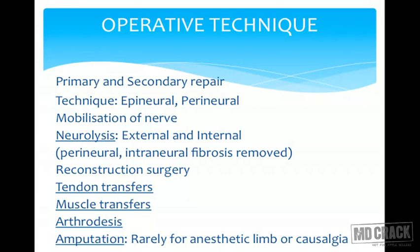A commonly done procedure is neurolysis — because fibrous tissue around the nerve causes compression, you must release it both externally and internally. The perineural as well as intraneural fibrosis is removed. Reconstructive surgeries are also done.